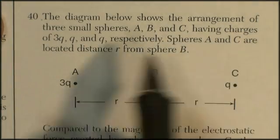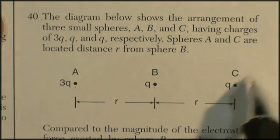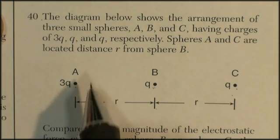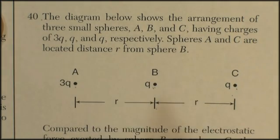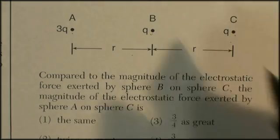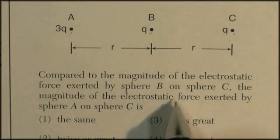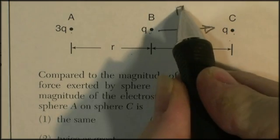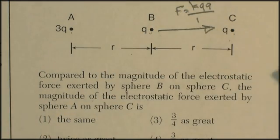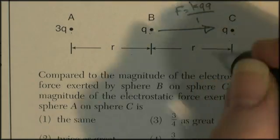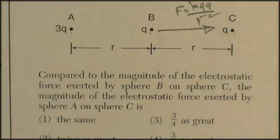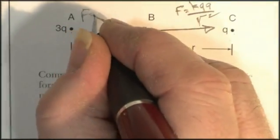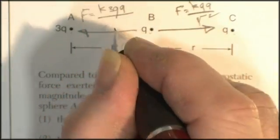Question 40. The diagram below shows the arrangement of three small spheres, a, b, and c, having charges of 3q, q, and q. Spheres a and c are located distance r from sphere b. So sphere b is right in the middle. So compared to the magnitude of electrostatic force, all right, this is going to ask me a complicated question. So let's just play with it a little bit. This force is going to be kqq divided by r squared. kqq divided by r squared. So whatever k is times 1 times 1 divided by r squared. This force here is going to be equal to k3qq over r squared.